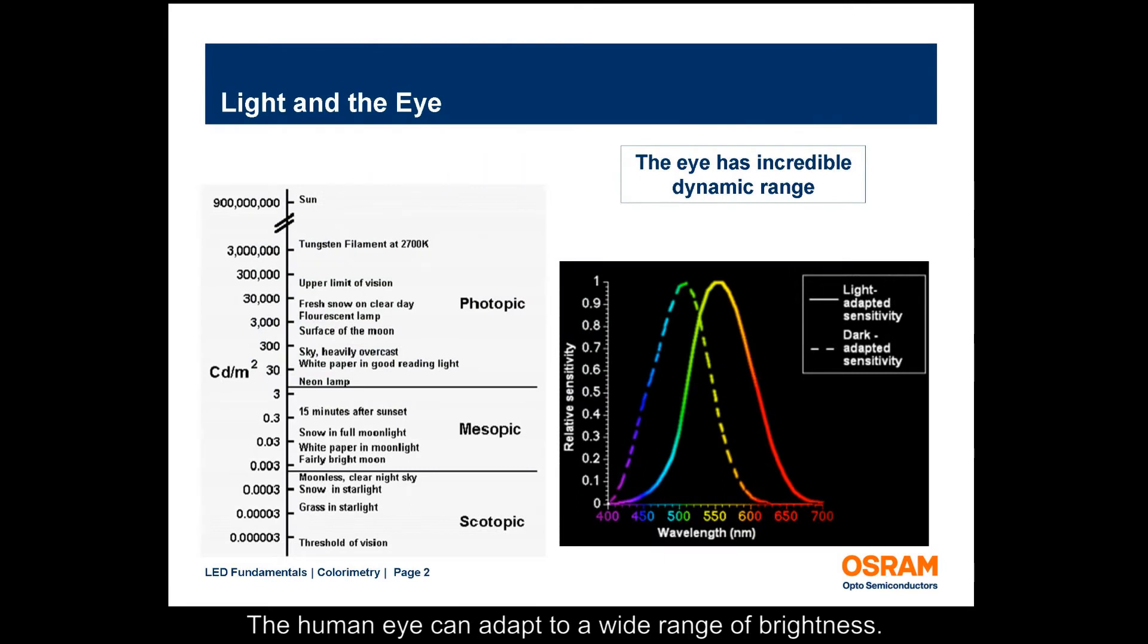The human eye can adapt to a wide range of brightness. Under well-lit conditions, the eye is operating in the photopic range, which is dominated by the color-sensing cones. Color calculations are for the photopic range only.